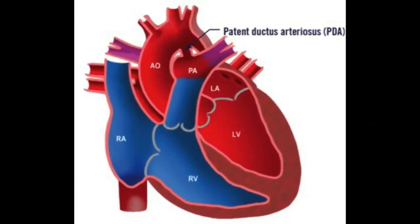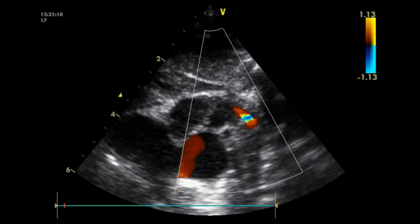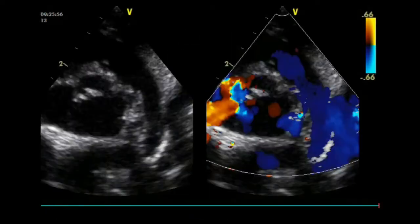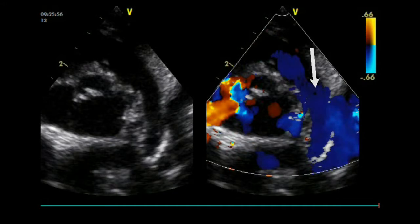The direction of the shunt across the PDA can be right-to-left, bi-directional, or left-to-right. In order to document it, color Doppler is required. A right-to-left shunt across the PDA is more difficult to see. Color Doppler will show a flow going from the pulmonary artery toward the descending aorta; thus, both great arteries and the DA will appear blue on color Doppler, because the blood moves away from the transducer.